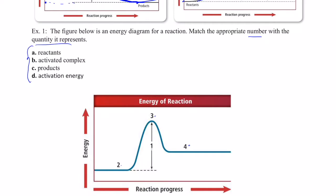Welcome back. The reactants — number 2 represents the reactants. That's correct. Number 2 represents the energy that the reactants possess before the chemical reaction begins.